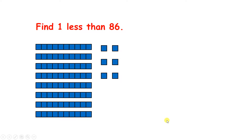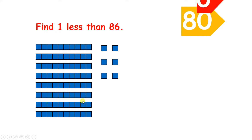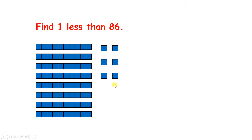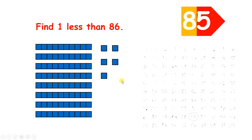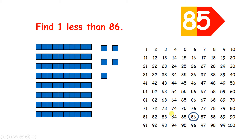Find one less than 86. So we have 8 tens and 6 units. If we take one away, we now have 8 tens and 5 units. So on the 100 square, to find one less, we move to the left. So instead of 86, we have 85.